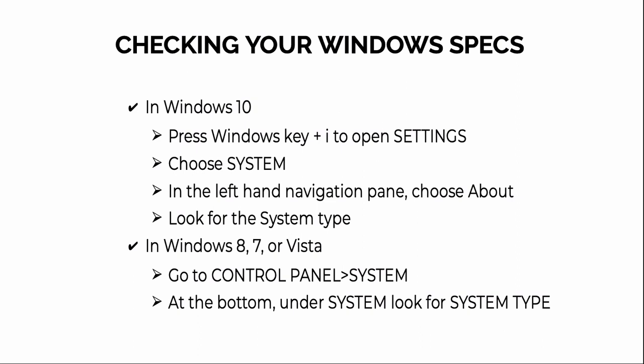If you're not sure whether you're running 32-bit or 64-bit Windows, you can check it as follows. In Windows 10, press the Windows key and the letter I to open Settings, choose System, then in the left-hand navigation pane choose About and look for System Type. In Windows 8, 7, or Vista, go to Control Panel, look for System, and at the bottom under System look for System Type.